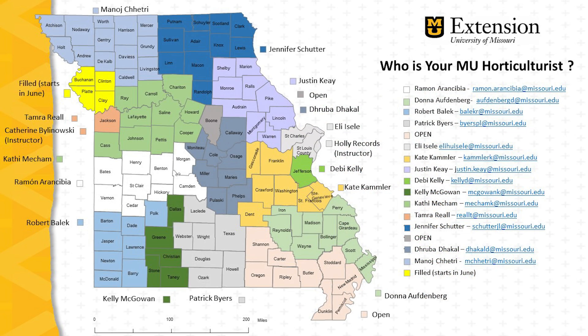Remember that if you have any questions related to commercial horticulture, you can reach out to your local MU Extension Field Horticulturist. This map shows the territories assigned to various specialists. Find your home county and reach out to the specialist assigned to your county.